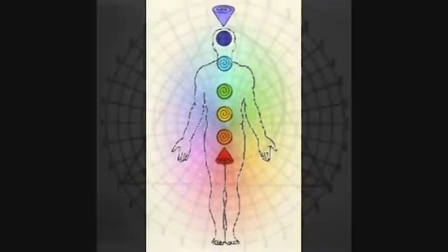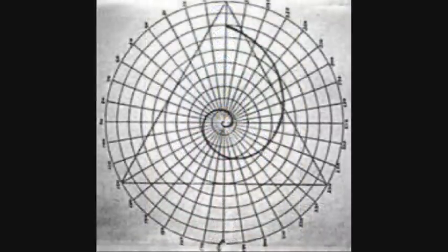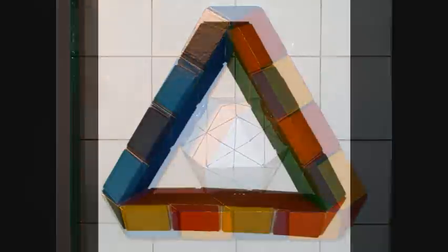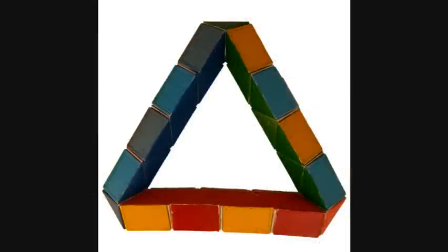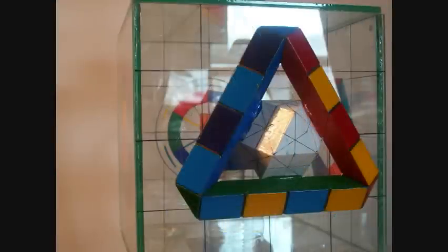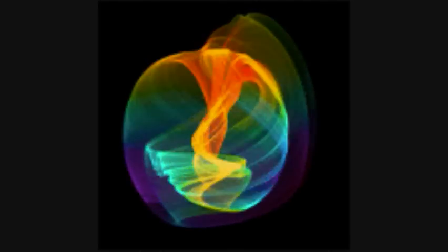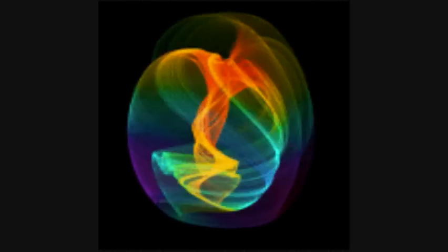Orange light begins to stream into your heart from the edge of this triangle, as the colors of red and yellow blend together and move into your heart from the edge of the 3D triangle. And behind you, green light begins to stream into your heart as you breathe into heart's center. Allow this light to fill each part of your being as your heart becomes the center of the rainbow.